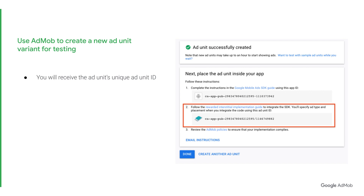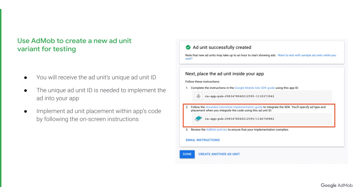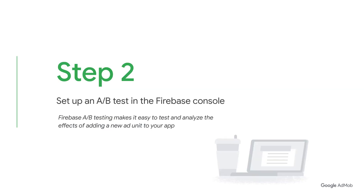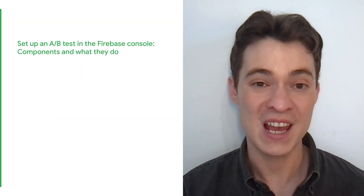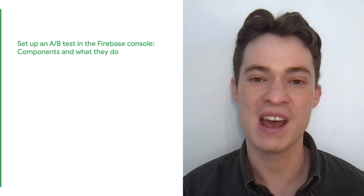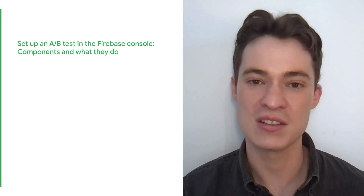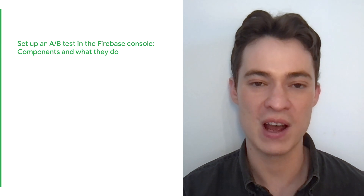You will then receive the ad unit's unique ad unit ID. Remember where to find this ad unit ID in your AdMob account, as you'll need it to implement the ad unit into your app. Next, implement the ad unit placement within your app's code. Next, set up an A/B test in the Firebase console. Firebase A/B testing makes it easy to test and analyze the effects of adding the rewarded interstitial to your app.